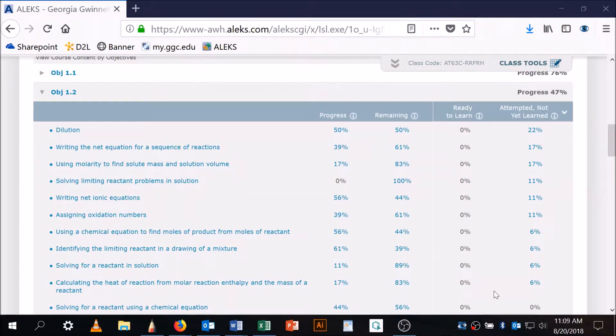Alright, so I'm looking over the objectives, or rather the topics that were attempted not yet learned from objective 1.2, which was last week. I haven't seen you guys since last week, so I'm just looking over this and saying what might we need to talk about today. So dilution - I did a video on last week. 22%, so about a fifth of the students who attempted it did not successfully get that.